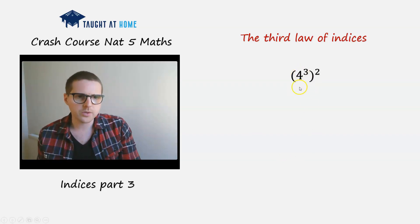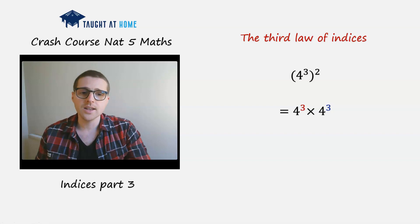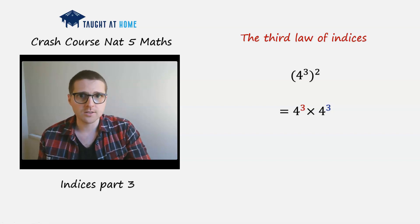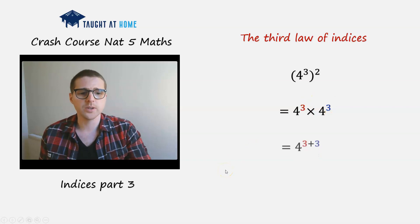Then we should know that what we're doing is we're multiplying 4 to the power of 3 by itself, like this. And then this is just the first law of indices. We're just adding the 3s up, so we get 4 raised to the power of 6.